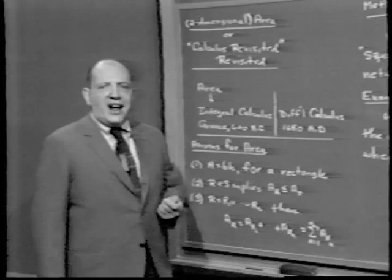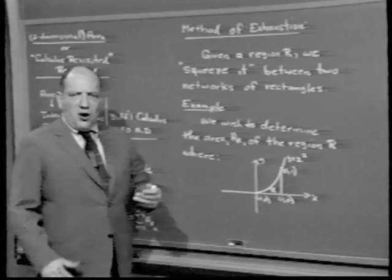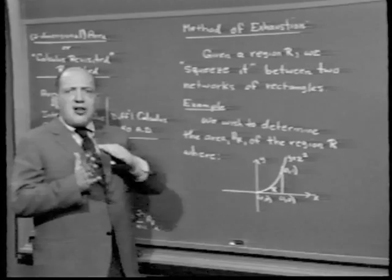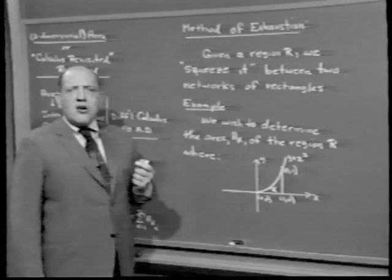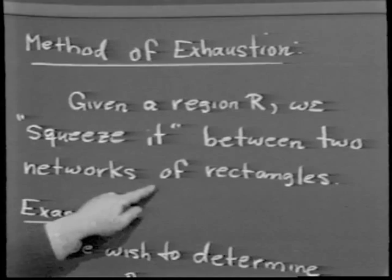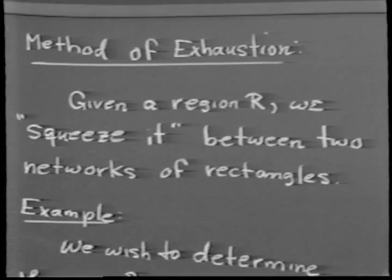Exhaustion does not refer to getting tired using the system — it refers to taking the region whose area we want to find and exhausting the space by squeezing it between regions made up of rectangles. Given a region R, we squeeze it between two networks of rectangles. Since we know the area of a rectangle, and the area of the whole equals the sum of the areas of the parts, knowing how to find the area of each rectangle lets us find the area of the entire rectangular network.